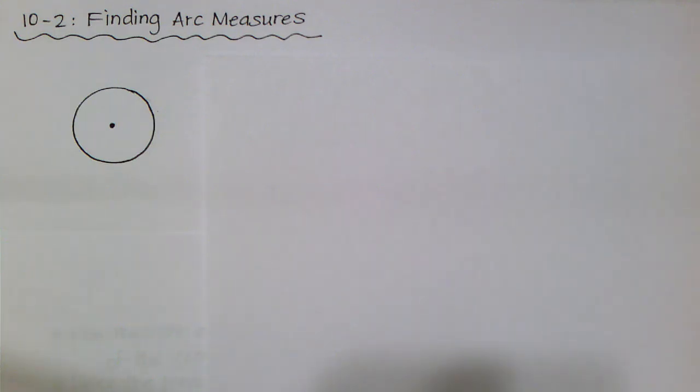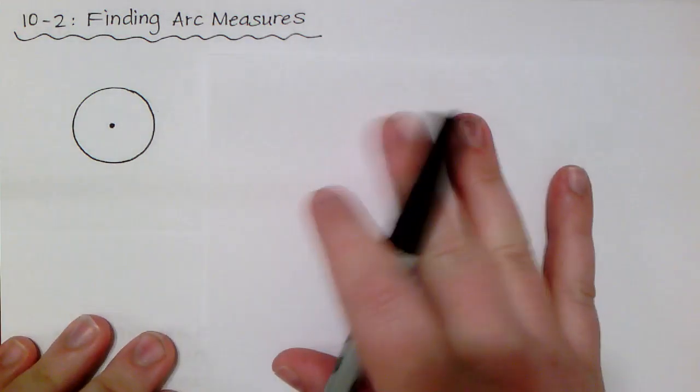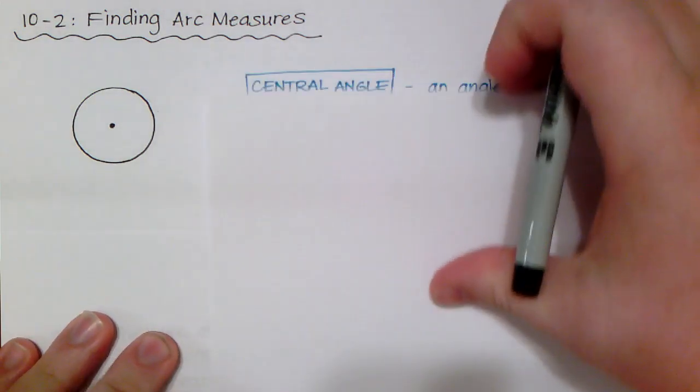Hello class! This is lesson 10-2 in our textbook, and the title of it is How to Find Arc Measures. So, as you can see here, I have a circle, and let's just talk about some more vocabulary terms to help us with this section.